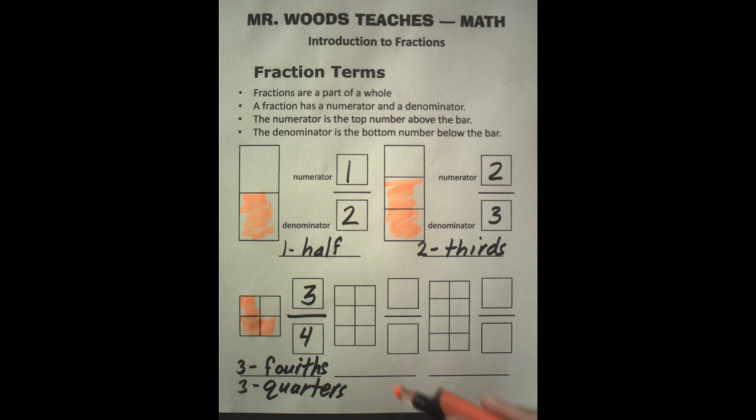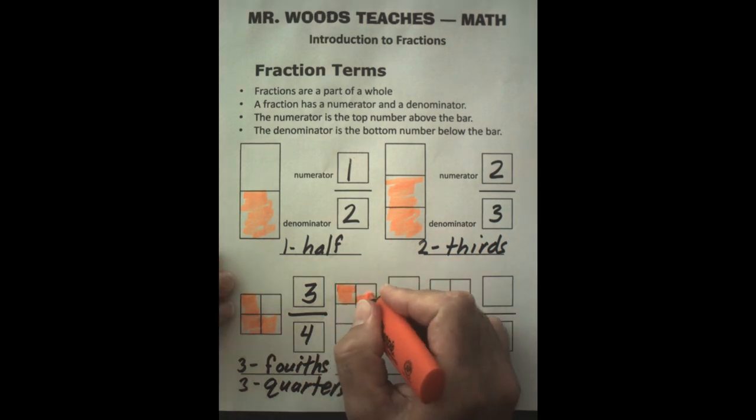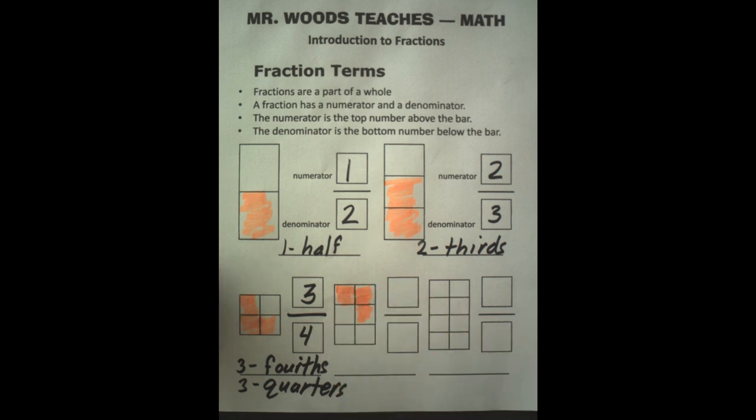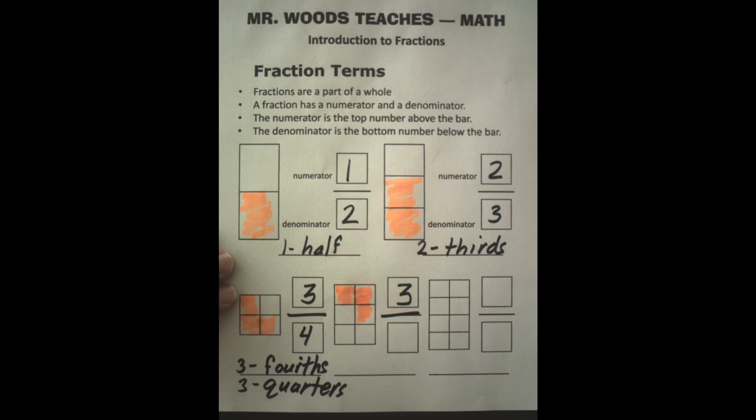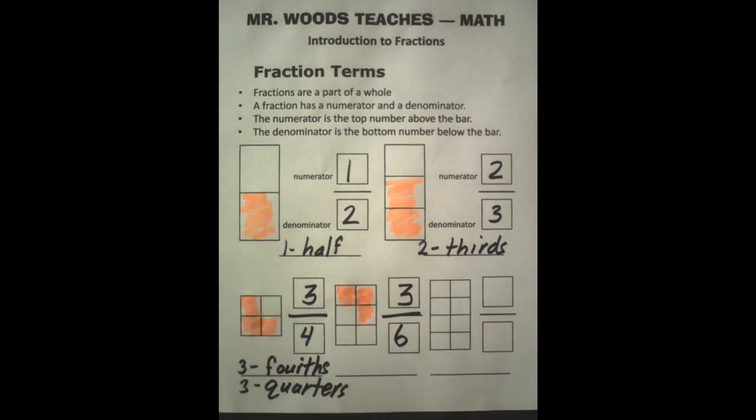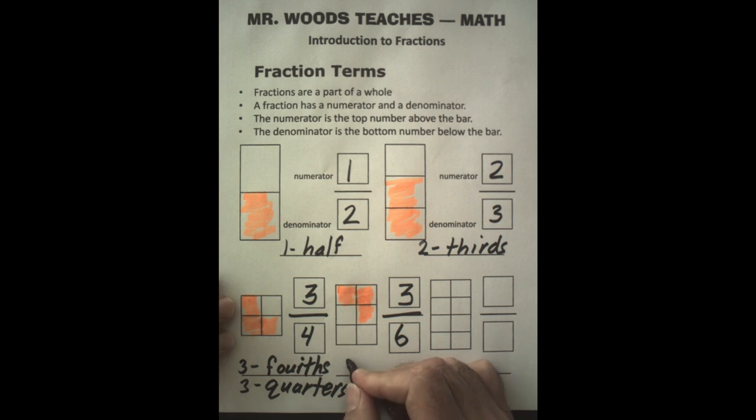Next up, we have six. Two, four, six. If I shade in three of these, I put in the shaded piece here, three, the bar, and then six is the denominator. So I have three sixths.